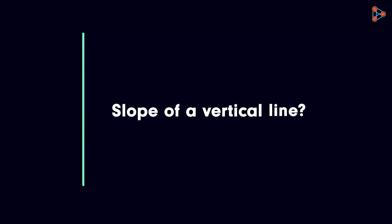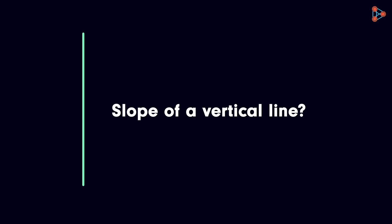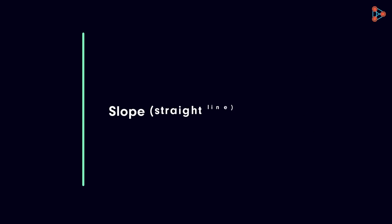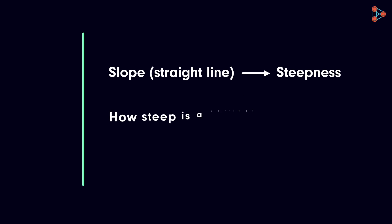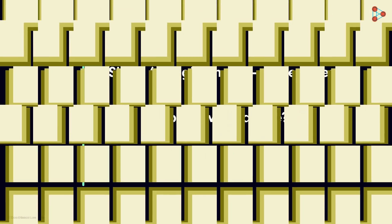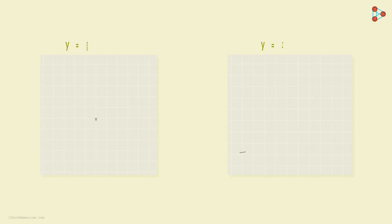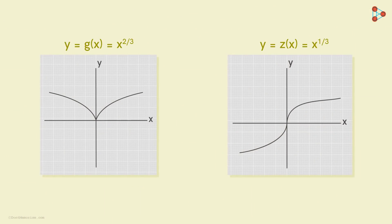What is the slope of a vertical line? Intuitively, the question doesn't make any sense. We know that the slope of a straight line measures its steepness. So how steep is a vertical line? We encounter situations like this in these types of functions.